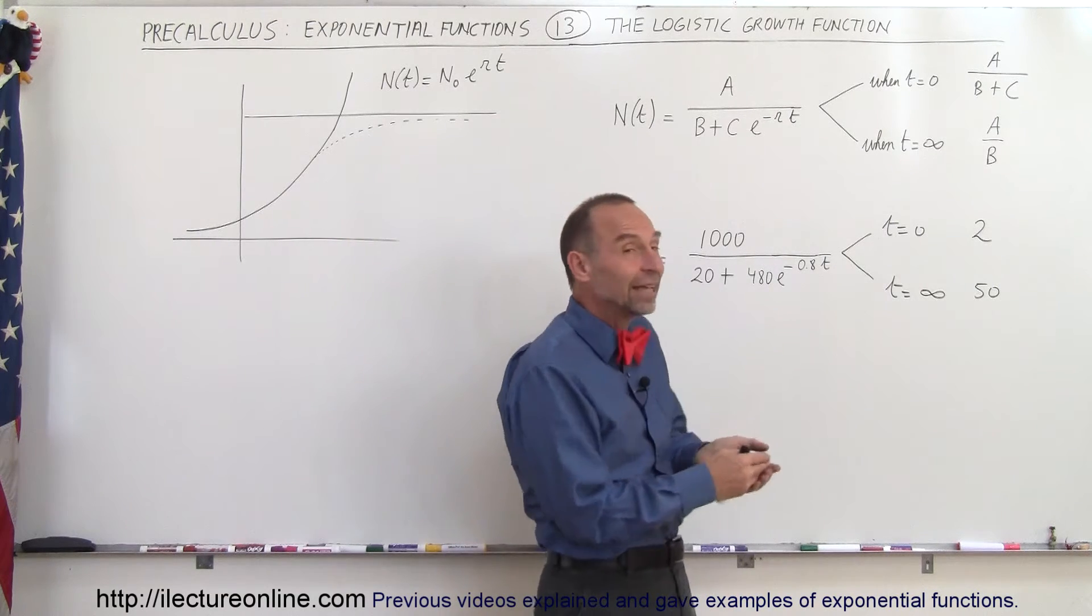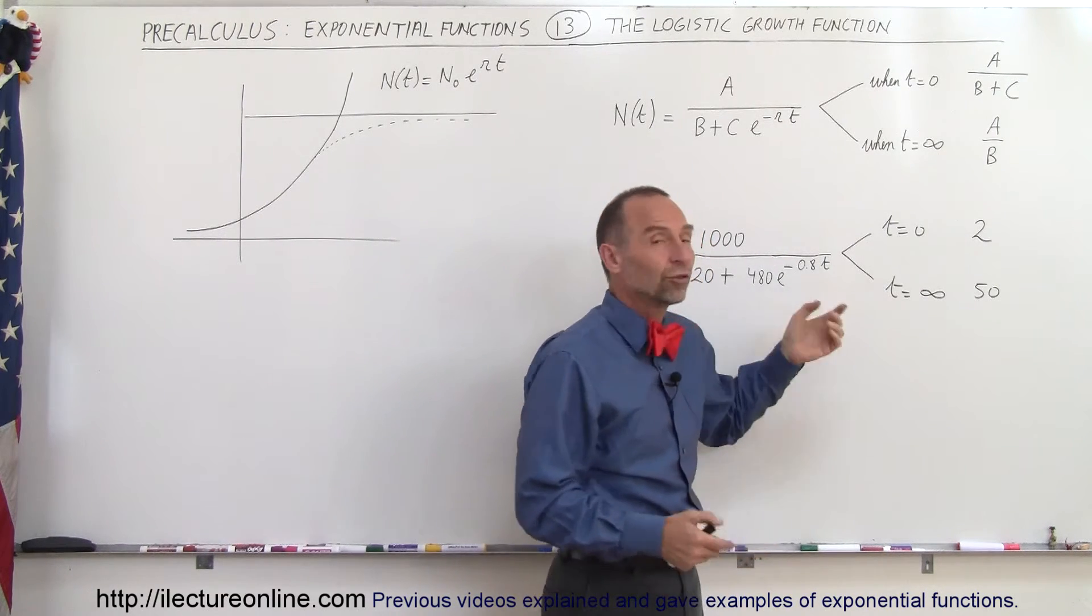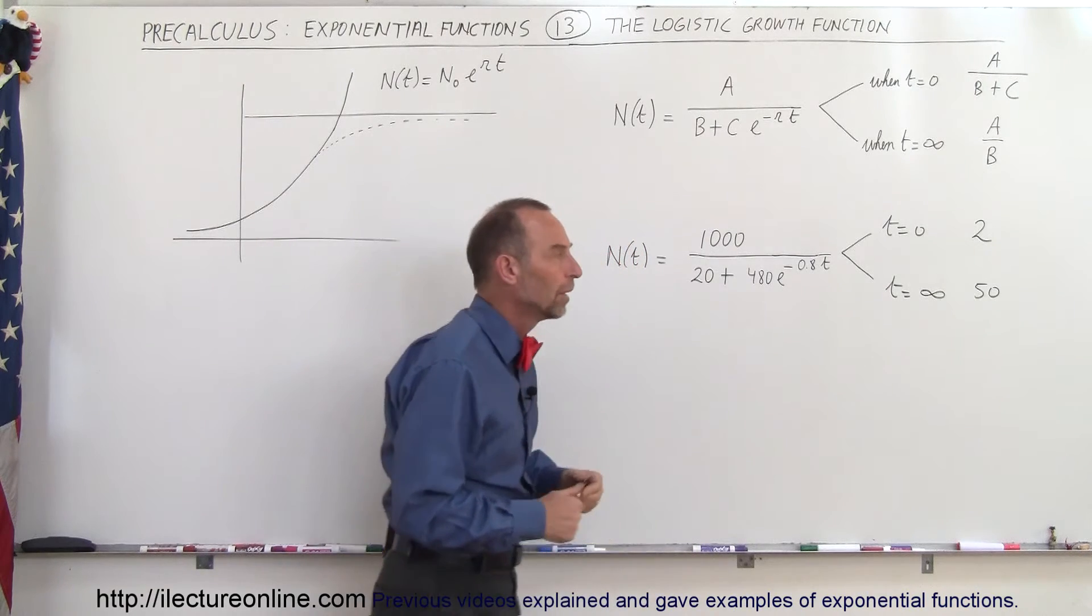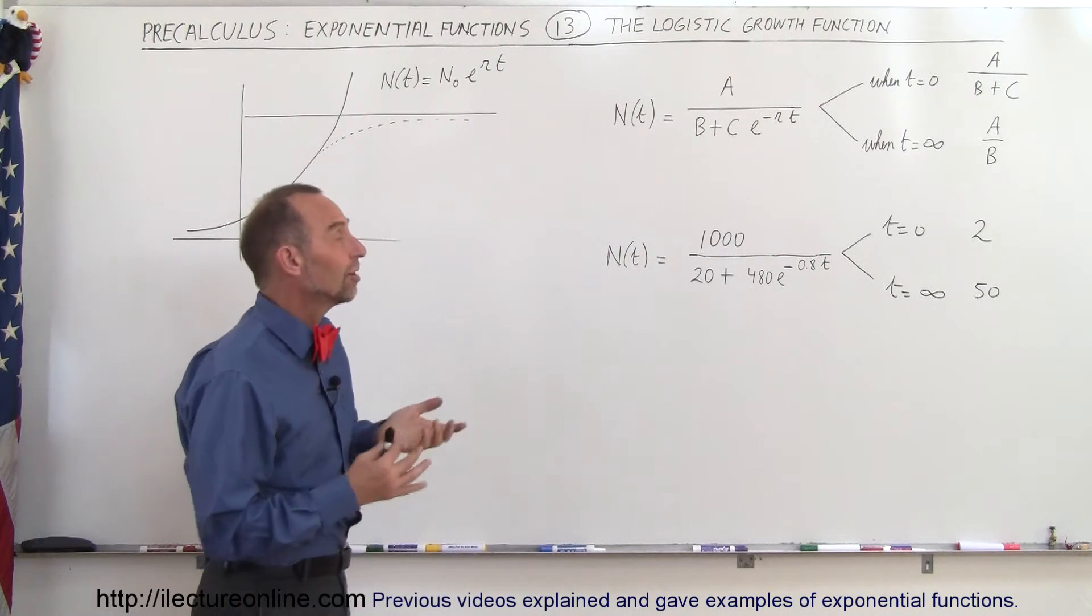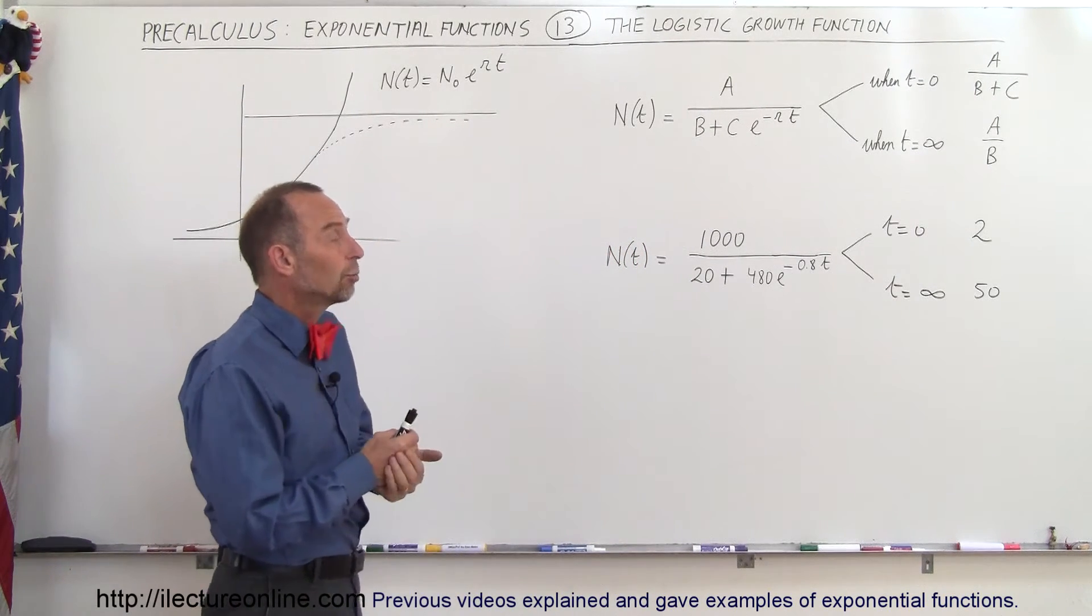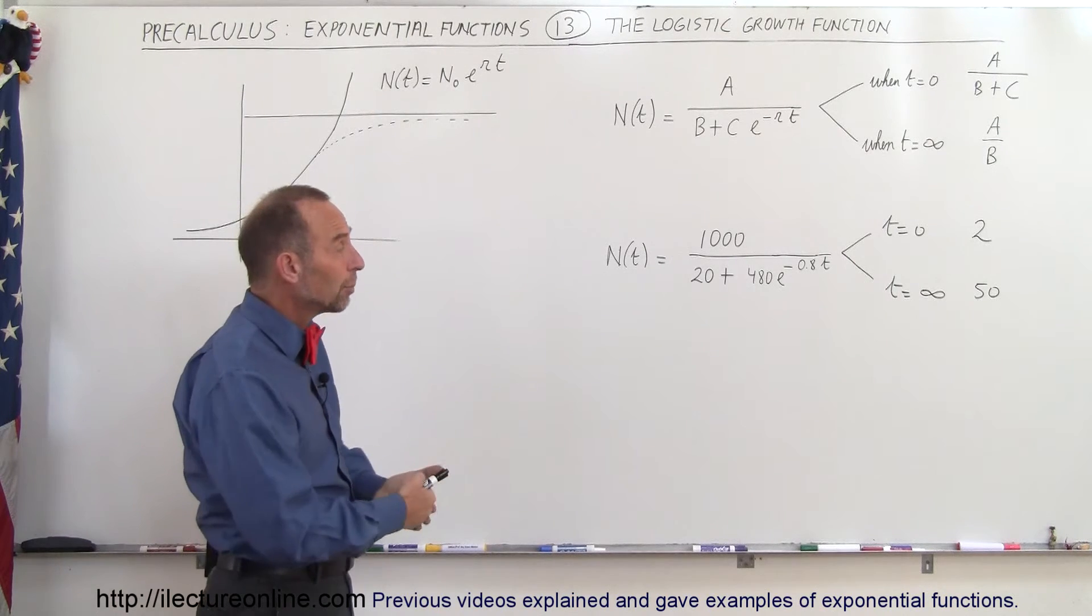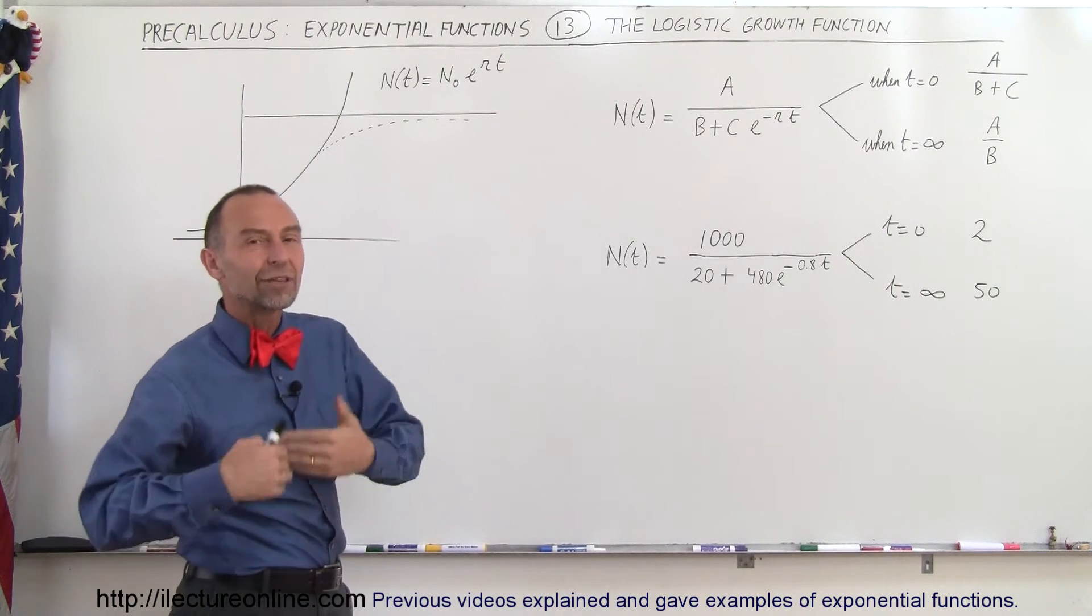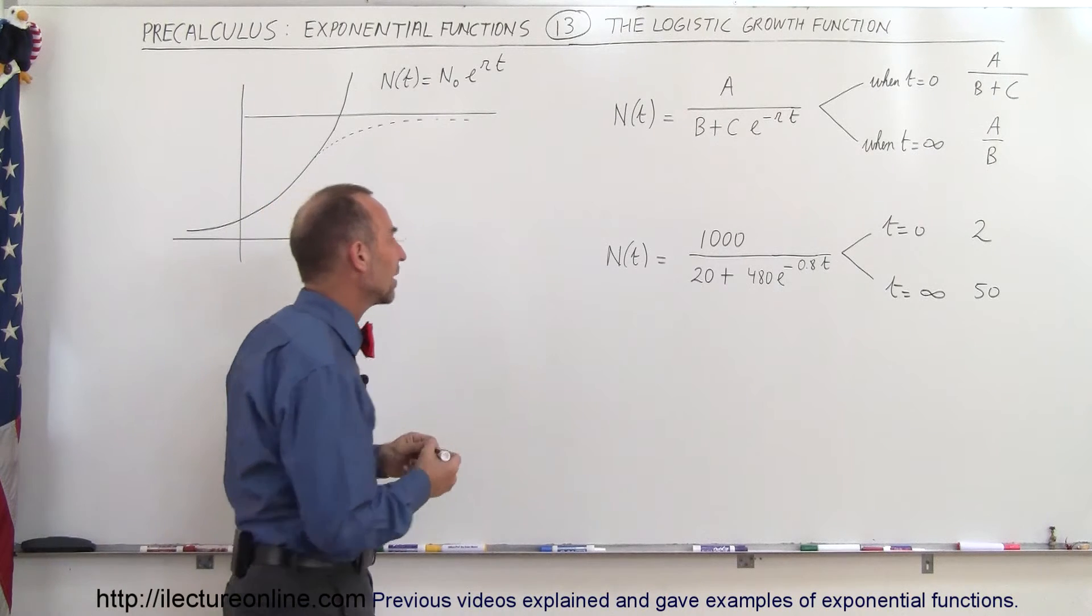Now of course it doesn't take an infinite amount of time to reach 50, that depends of course on this constant r. So let's use that example to see for example what the population would be when t is equal to 1 and what the population would be when t is equal to 5 to get kind of a feel for that. So let's do the example.